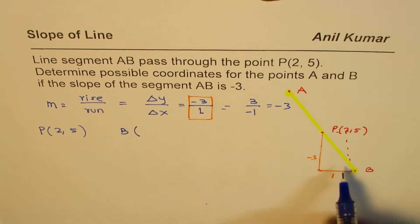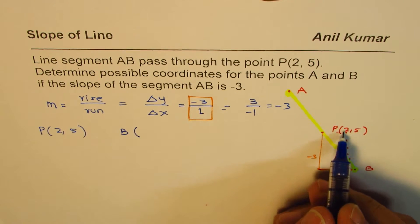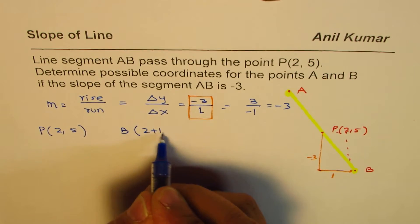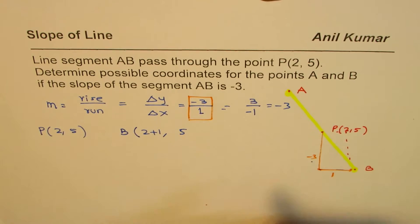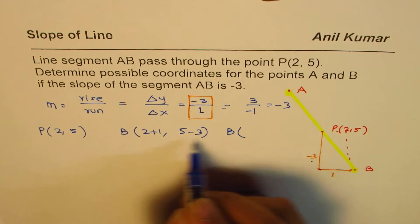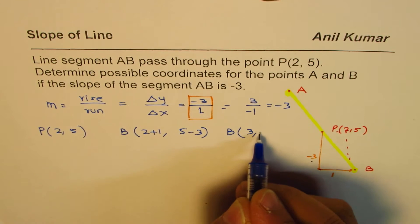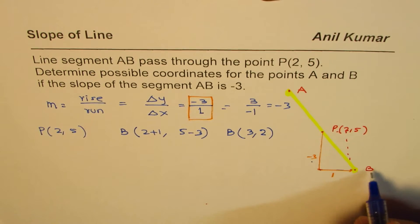So B's coordinate, as far as the X value is concerned, is plus 1. So it is 2 plus 1. And the Y value is from 5, take away 3, minus 3. So we could write B as 3 and 5 take away 3 is 2. So we get the coordinates of point B as (3, 2).